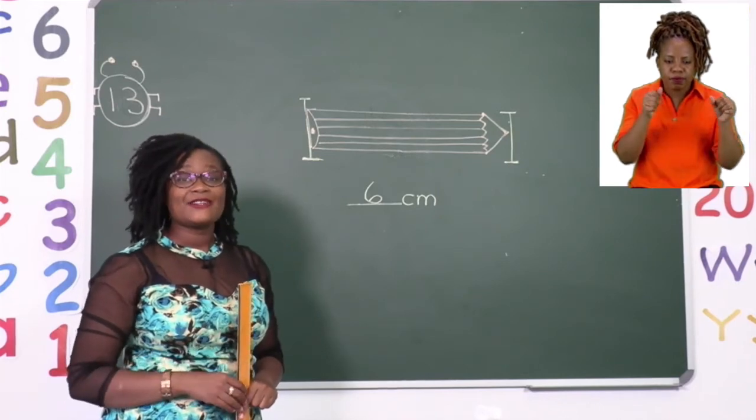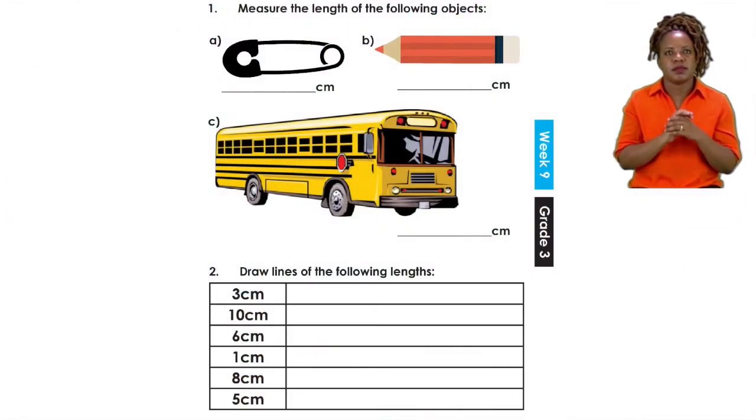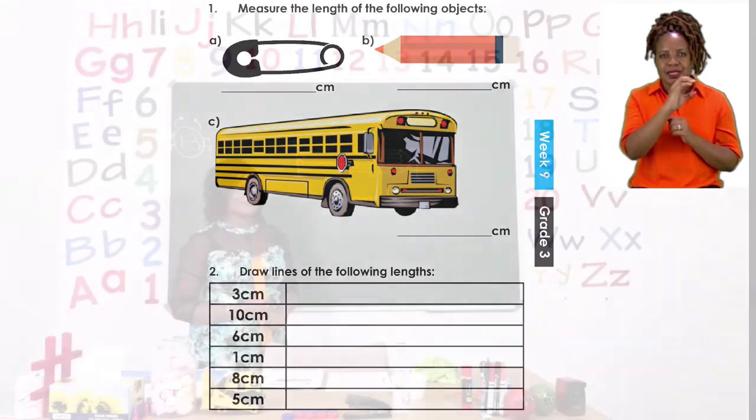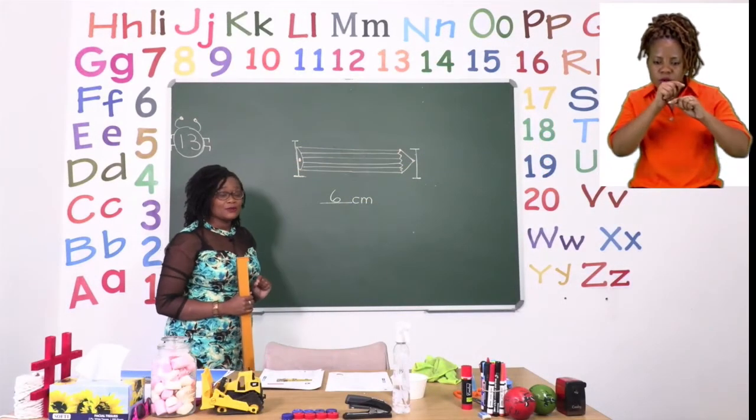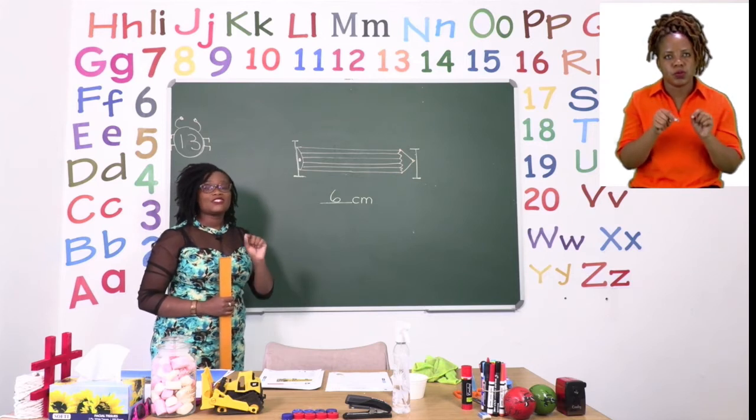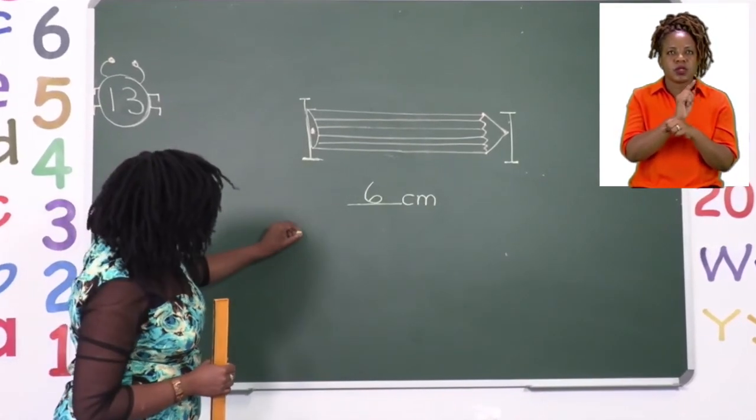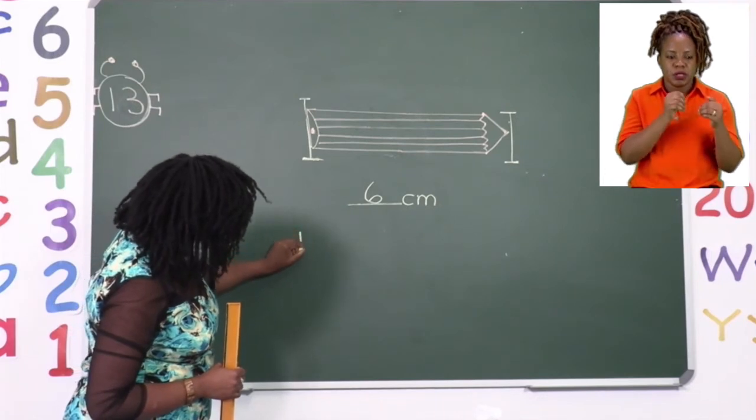Let's now take a look at the second part of our exercise. Now the second part is asking you to draw lines for the following lengths, and we are going to try and do number two together. So let's take a look at the board. Now the first thing you need to do is draw your starting line where you will place your CM or your zero. So I am going to put my starting line here.